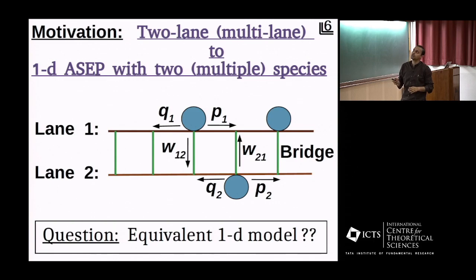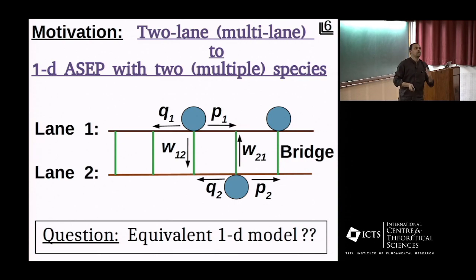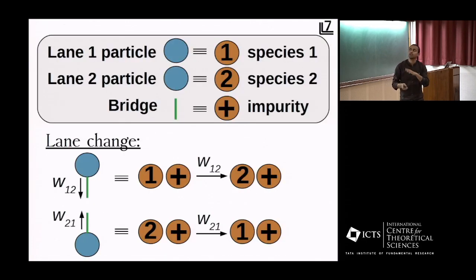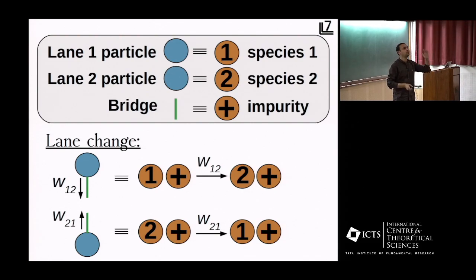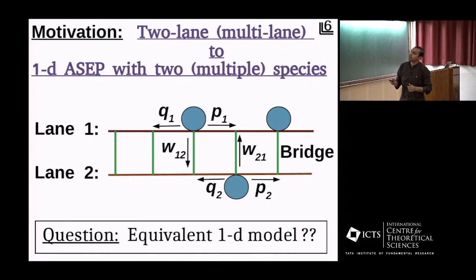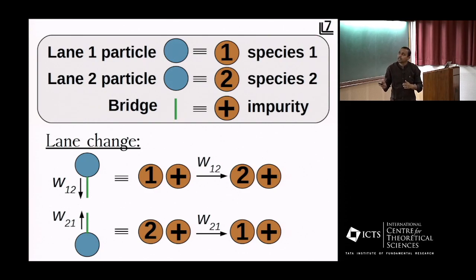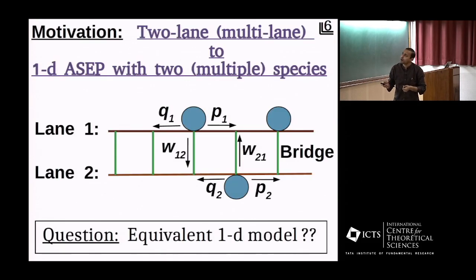In the two-lane model, in lane one particles can hop with rates p1 and q1, and in lane two with rates p2 and q2. There are bridges connecting the lanes, so particles can go from one lane to the other. The question is: can we have an equivalent one-dimensional model? We propose to consider the lane-one particle as species one, the lane-two particle as species two, and the bridge between the lanes as a separate species which we call the impurity. The diffusion of particles in the two lanes just becomes the diffusion of the two species. For the lane-change dynamics, if a particle in lane one sees the bridge, it can change lane with rate w12 — in our model this means species one hitting the impurity simply becomes species two.